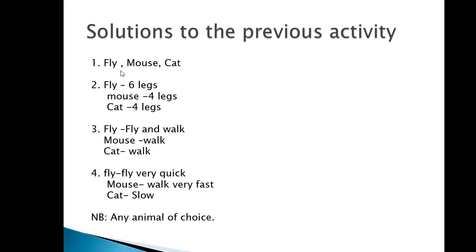In number two, you're supposed to count the number of legs each animal has. My fly had six legs, my mouse has four legs, and my cat has four legs. How they move: my fly flies and also walks, my mouse walks, and my cat also walks. How quickly they move: the fly flies very quickly, the mouse walks very fast, and the cat walks very slowly.